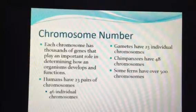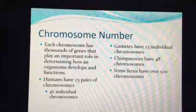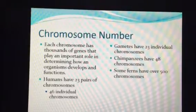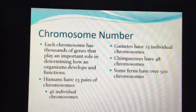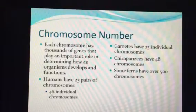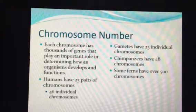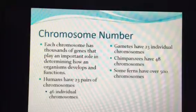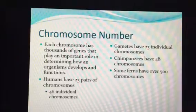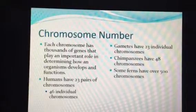Each individual has a lot of chromosomes, and some organisms have more chromosomes than others. Most plants have over 200 chromosomes — ferns, for example, have over 500 chromosomes. Chimpanzees have 48, we have 46, frogs have 26, a mosquito has six, and a common housefly has 12. It really depends on the species, and the more chromosomes they have, the more complex it is to breed them.